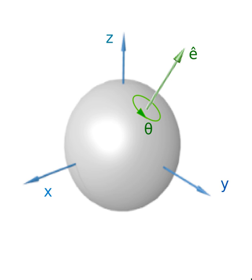For example, in two dimensions, rotating a body clockwise about a point keeping the axes fixed is equivalent to rotating the axes counterclockwise about the same point while the body is kept fixed. These two types of rotation are called active and passive transformations.